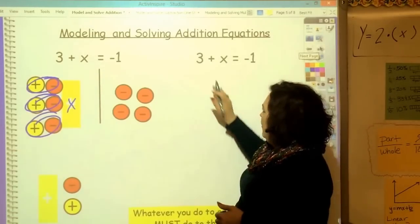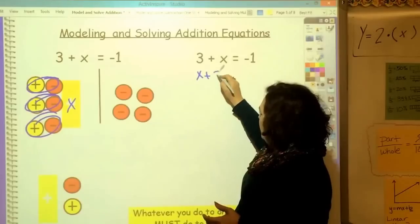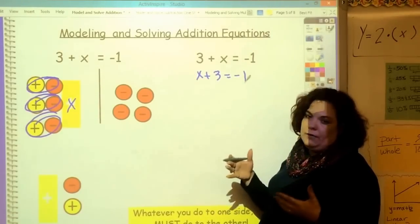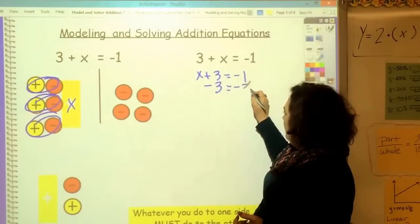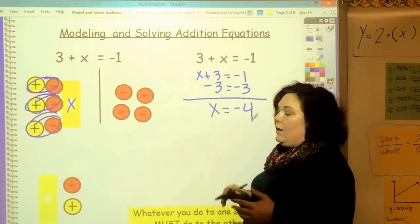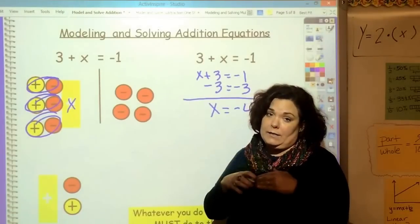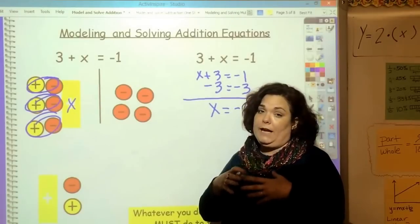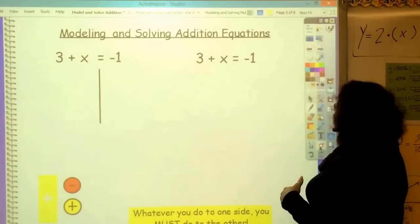And then this one, 3 plus x equals negative 1. I can flip this around. I can write it x plus 3 equals negative 1, which I actually prefer. I like leaving my variable over here. You can do it either way. But, what's the opposite of adding 3? It's subtracting 3. And so, x equals negative 1 plus negative 3 is negative 4. Now, it's going to be very important that you write every step and that you write exactly what I write. Because that is how you solve these. And you don't want to get lost where these get really complicated and very long because you haven't written down all of your steps.